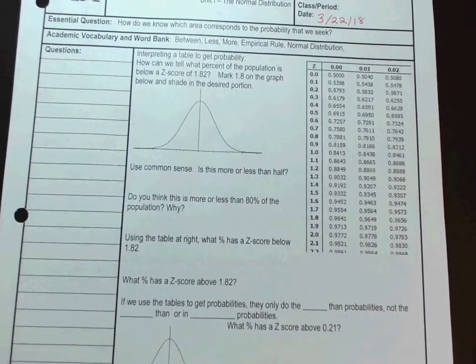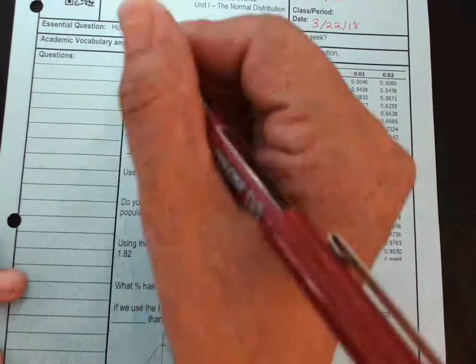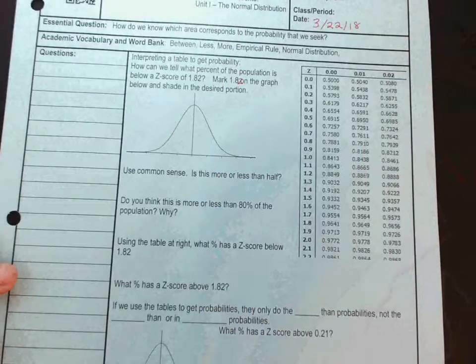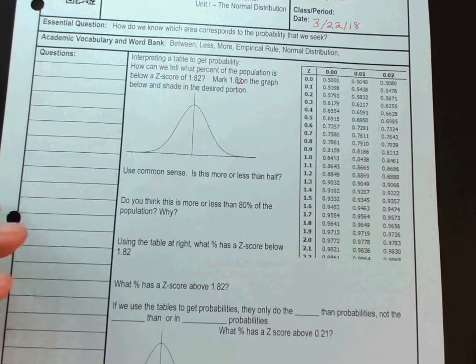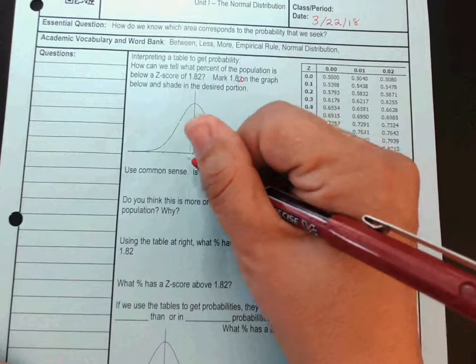So our warm-up was primarily concerned when z-scores were nice numbers, but what about when z-scores are not pretty numbers? So here we're using 1.82 as a z-score, and we want to know what percent of the population is below that.